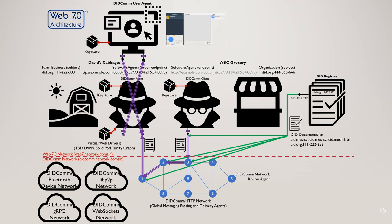This is the topmost layer six of the DIDCOM architecture reference model — the realization of Web 7.0. DIDCOM agents can do point-to-point communications or route messages through a DIDCOM network. The transport can be HTTP, Bluetooth, gRPC, or web sockets. There's a special kind of DIDCOM agent called a DIDCOM user agent that is paired with a traditional DIDCOM agent and exposes a user interface — the way humans interact with a DIDCOM network.